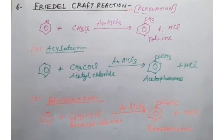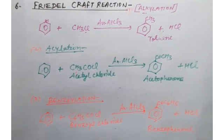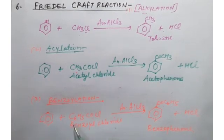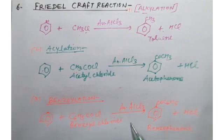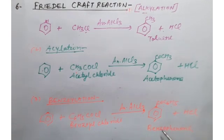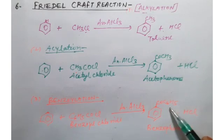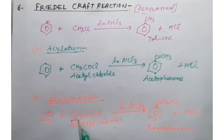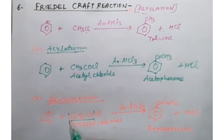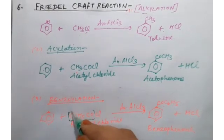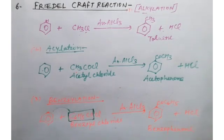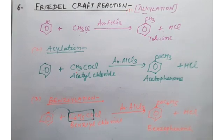The third Friedel-Crafts reaction is benzoylation. In benzoylation, benzene reacts with benzoyl chloride (C6H5COCl) again in presence of anhydrous AlCl3. The product formed is benzophenone — a ring with COC6H5 — and HCl is removed out. This benzophenone formation is called benzoylation.